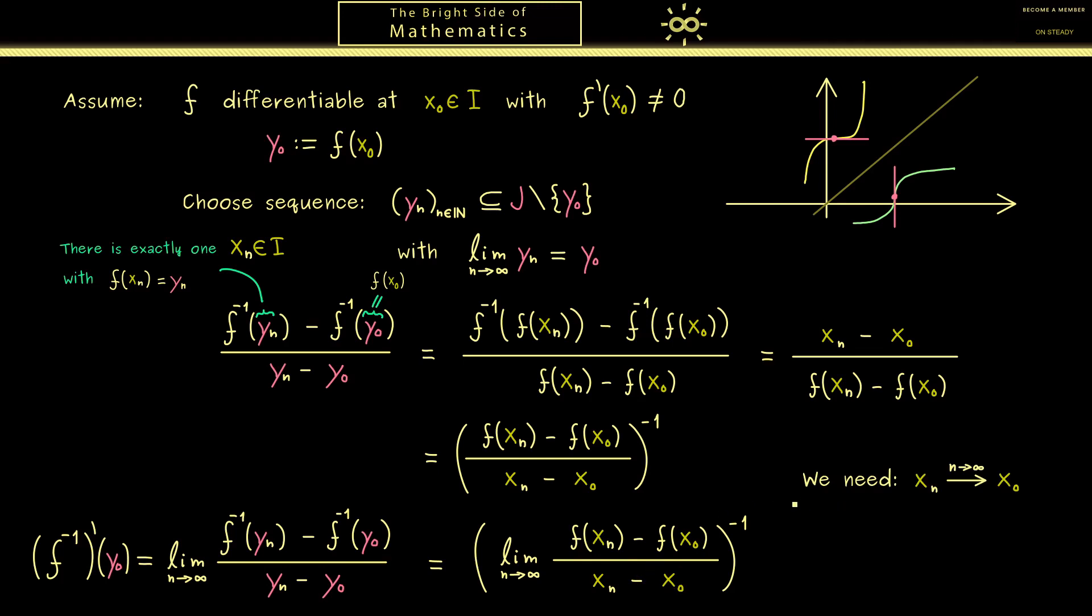Hence this is what we really need. Otherwise the whole calculation wouldn't work. The problem here is we don't know what the limit of xn is because we only know that the limit of yn is y0, which of course we could use here when we apply the inverse function, because f inverse yn is simply xn.